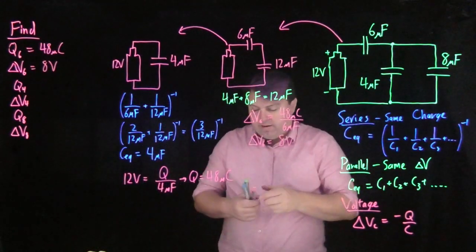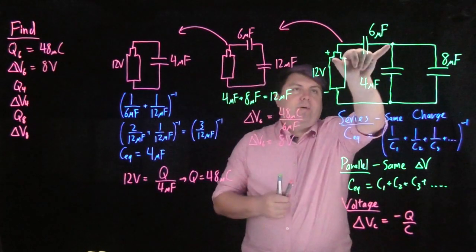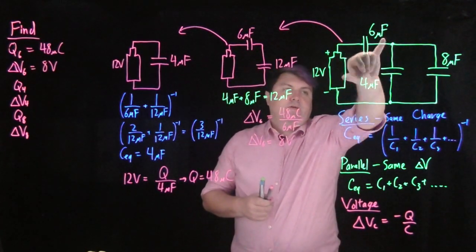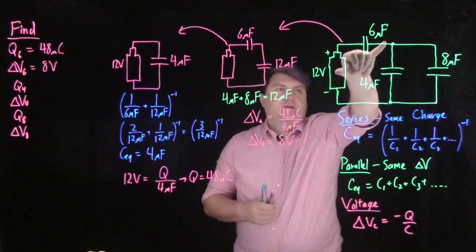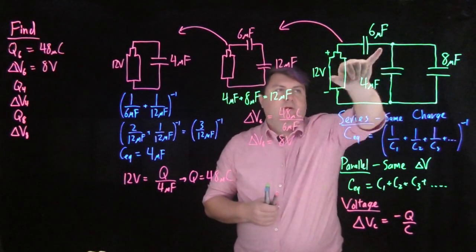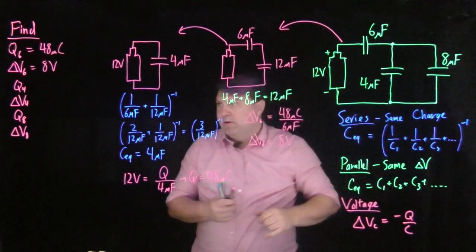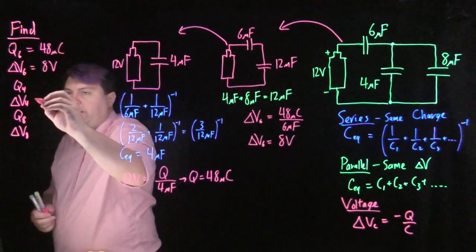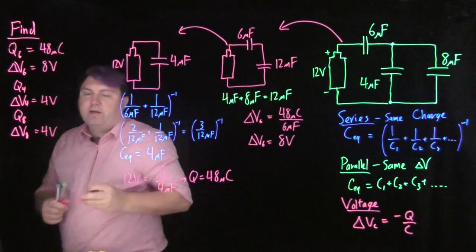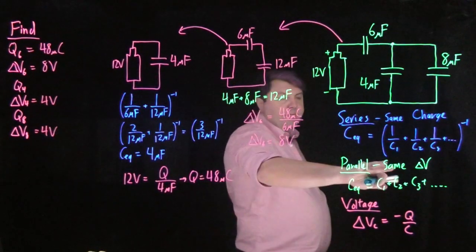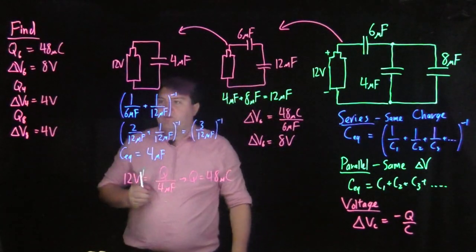Now I can go back here, and I know that I drop 8 volts here, so then I have to drop the remaining parts of the 12 volts here. 12 minus 8 gives me 4. So now I know the voltage over 4 and 8 is 4 volts and 4 volts. That's really nice because my parallel has to have the same voltage drop.